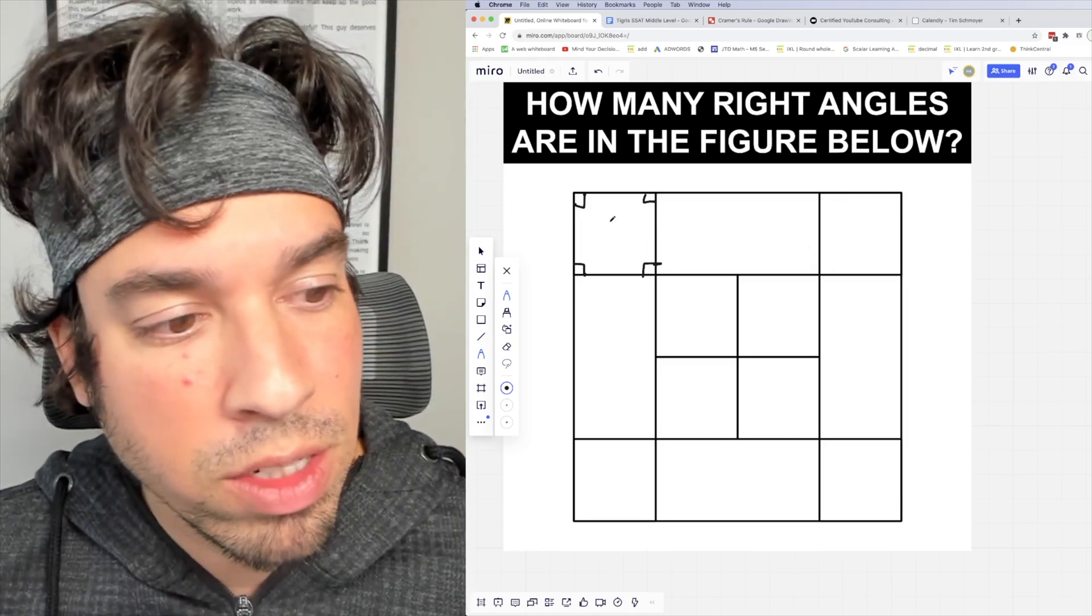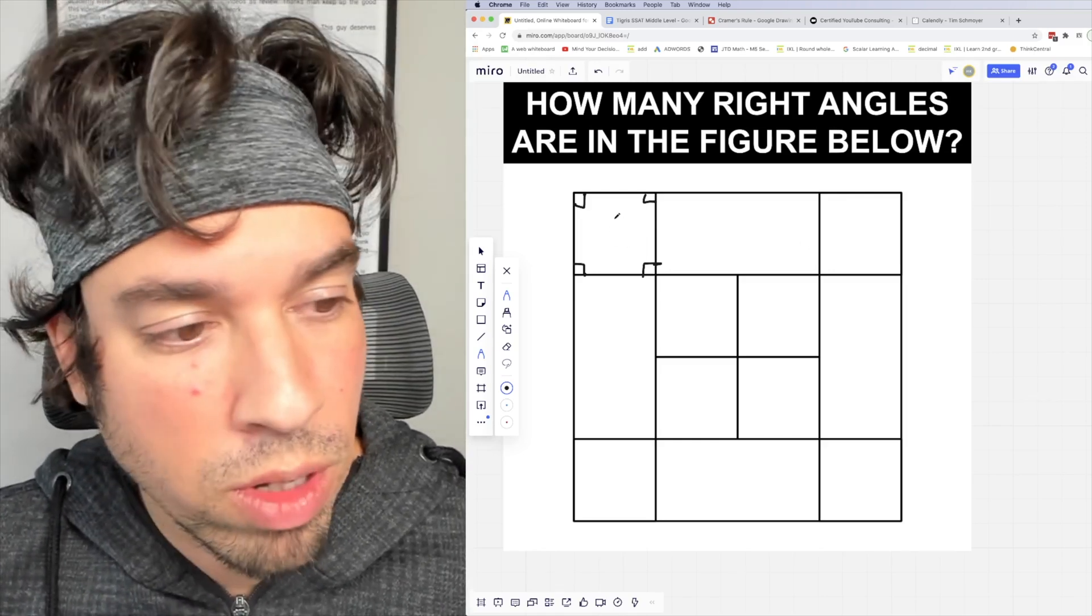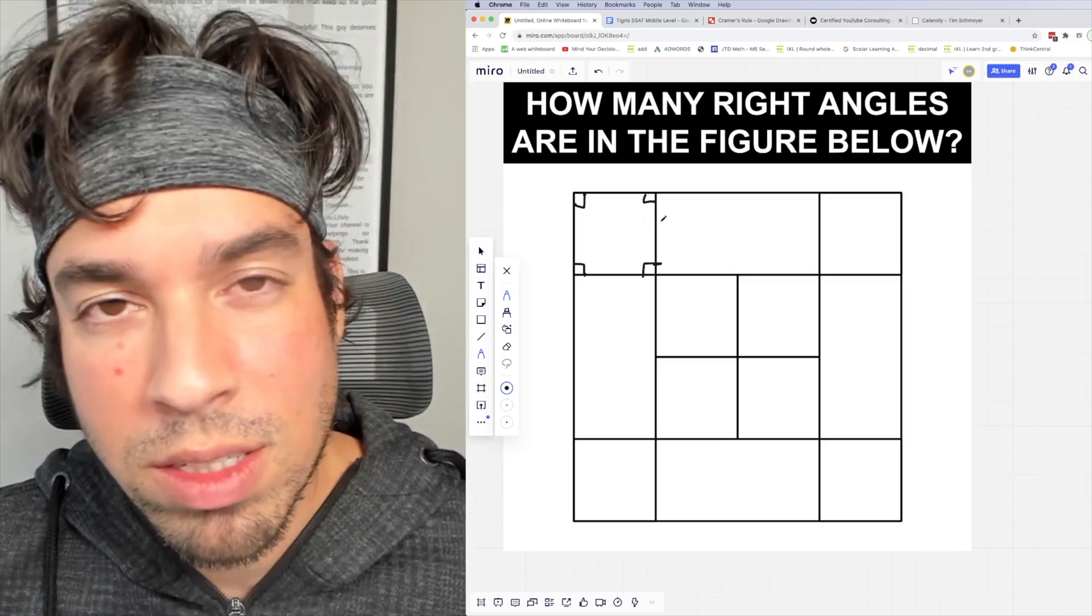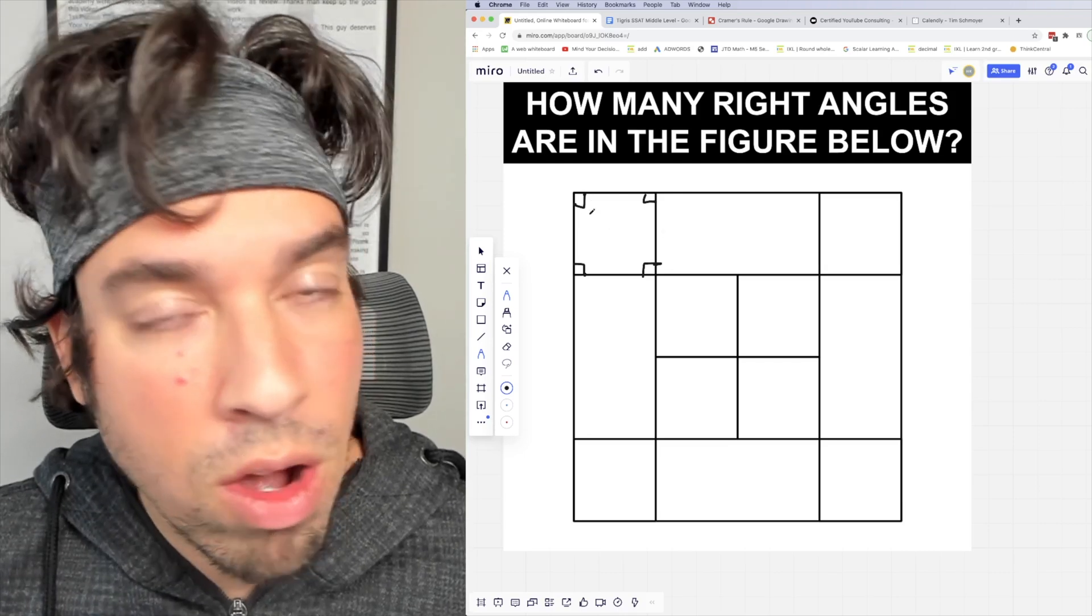But a better way is to recognize, well, each quadrilateral, every one of these squares and rectangles, they all have right angles, and they all have four.